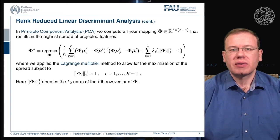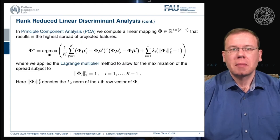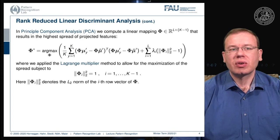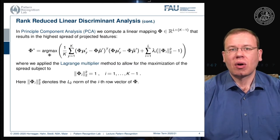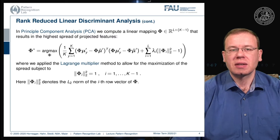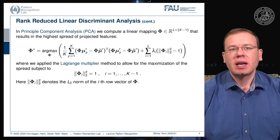We must introduce this regularization because we are doing a maximization over the space of transforms. Without constraints, the left-hand side term could be maximized simply by letting all entries of phi go towards infinity. That is not what we are looking for, so we need to introduce these constraints.